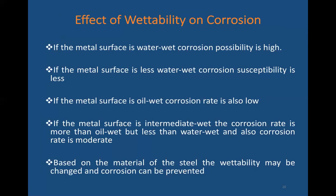How wettability can affect corrosion: if a metal surface is water-wet, corrosion probability is high — water is always attached to the surface under wetting conditions. If the metal surface is less water-wet, corrosion susceptibility is less. If the metal surface is oil-wet, corrosion rate is also low. If the metal surface is intermediate-wet, the corrosion rate is more than oil-wet but less than water-wet, so it is moderate. Based on the material of the steel, the wettability may change and so will the corrosion rate.